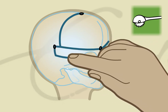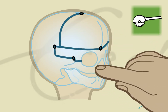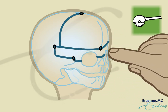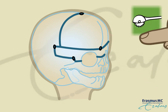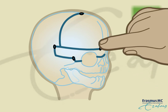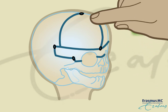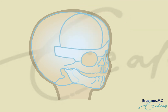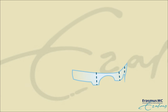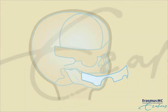Because the orbits are also abnormally shaped, the upper orbital rims are also taken off. The upper orbital rims are remodelled by removing the ridge in the midline and by bending the side parts.